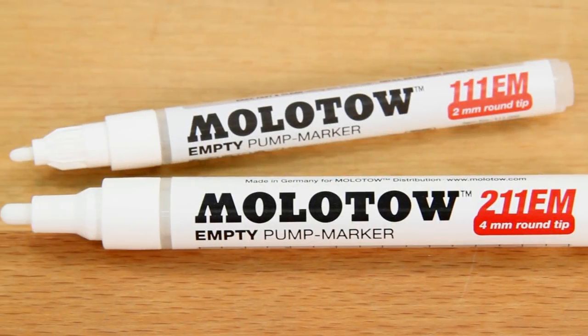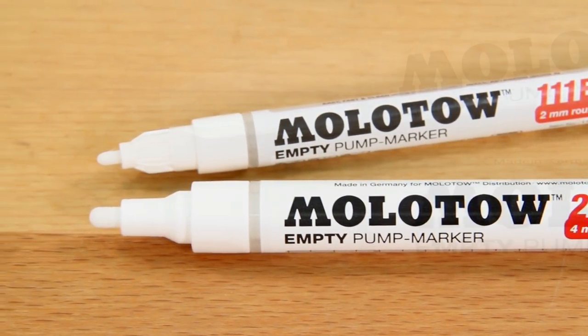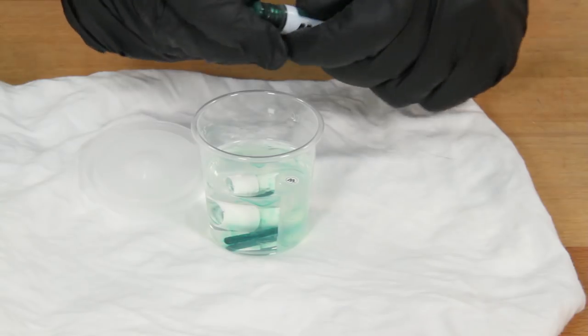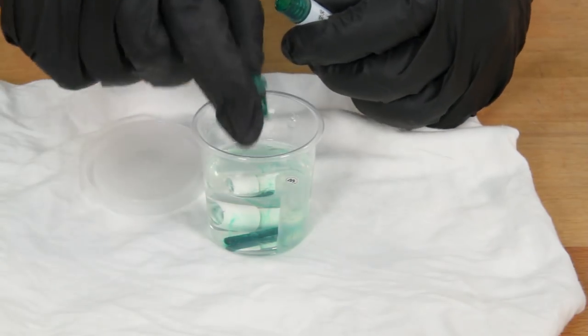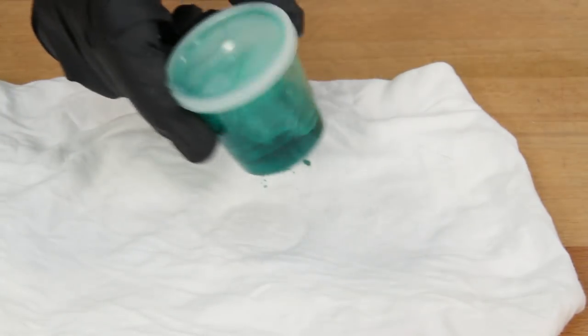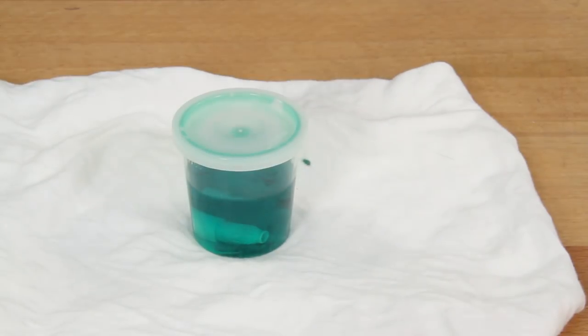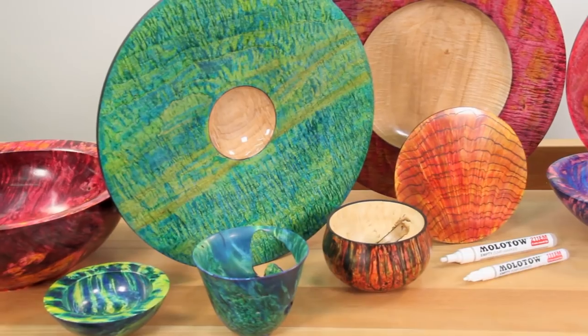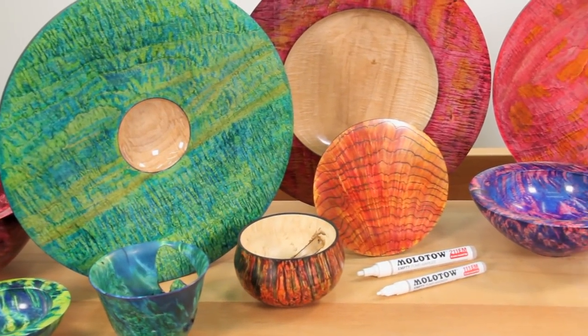Made in Germany and available in 2mm and 4mm round point sizes, Molotow Markers can be reused again and again by simply removing the tip assembly and rinsing with alcohol. Expand your coloring horizons today with Molotow Pump Markers.